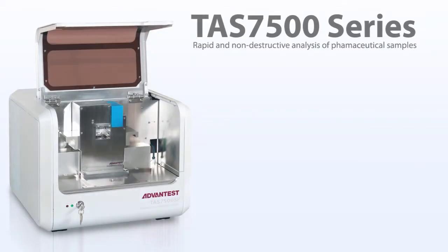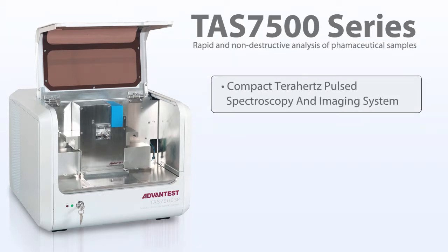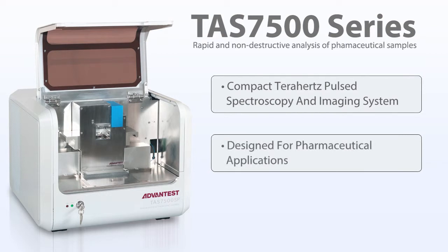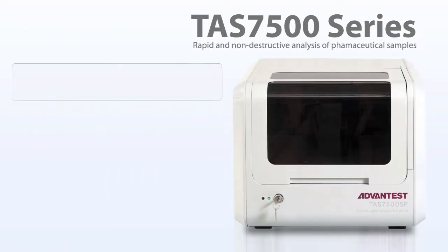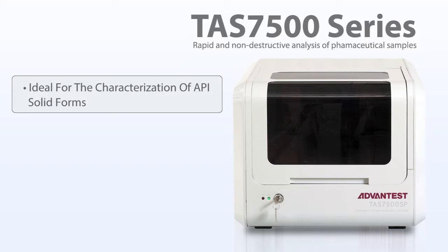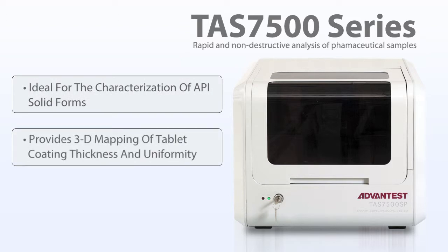The Advantest TAS7500 is a compact terahertz pulsed spectroscopy and imaging system designed for pharmaceutical applications. The spectroscopy unit is ideal for the characterization of API solid forms, while the imaging unit provides 3D mapping of tablet coating thickness and uniformity.